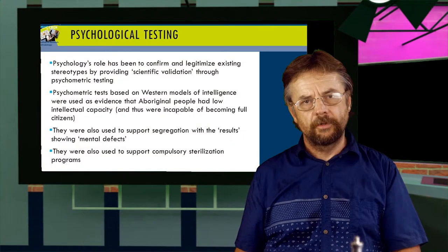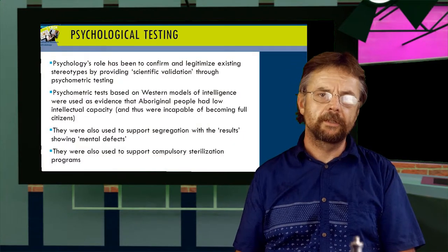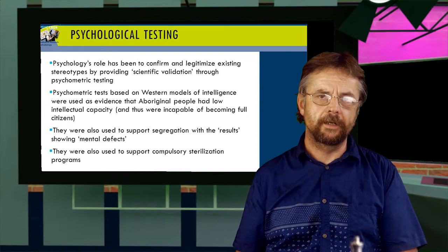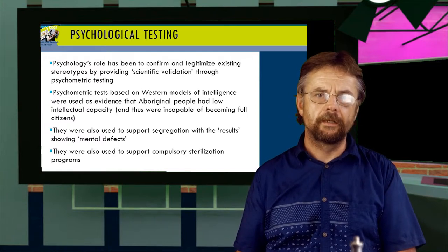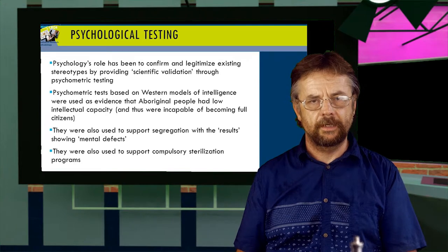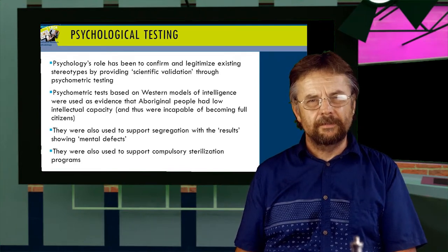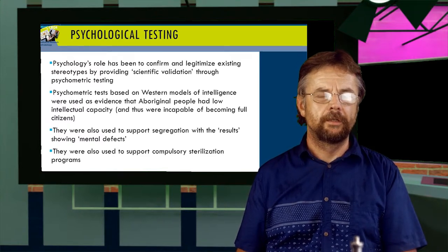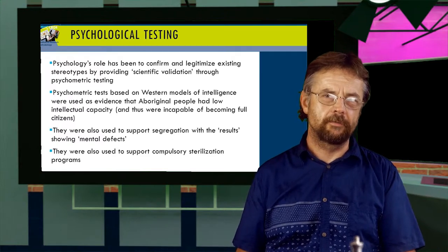During the 19th century, psychology played a minor role in the treatment of Aboriginal Australians, but this became more significant in the 20th century when psychology emerged as a professional discipline. During that time, psychology developed a string of psychological testing of Aboriginal Australians, and its role from the 20th century in colonisation has really been to confirm and legitimise existing stereotypes. We're not so familiar with how psychology encourages and promotes stereotypes of particular groups of people.